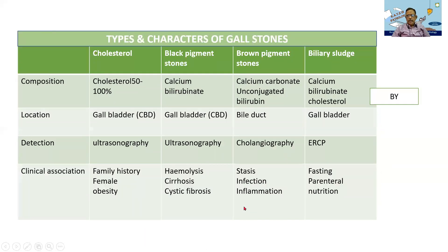This is a table that I would like you to memorize. Pigment stones can be calcium bilirubinate or calcium carbonate. There can also be biliary sludge. Cholesterol is another stone type. Most of them are located in the gallbladder, or they can form an obstruction in the bile duct. The method of diagnosis will be either ultrasonography or ERCP — endoscopic retrograde cholangiopancreatography. Most will have either a family history, history of hemolysis, or infections because of stasis.